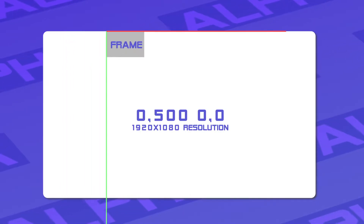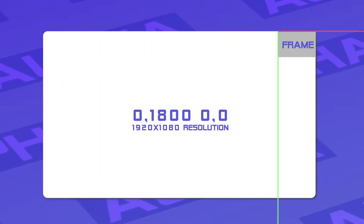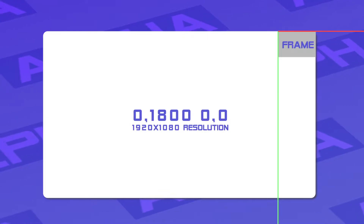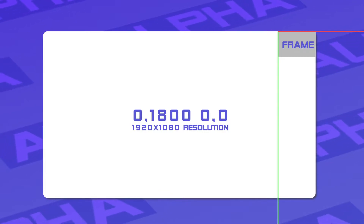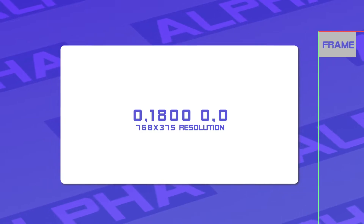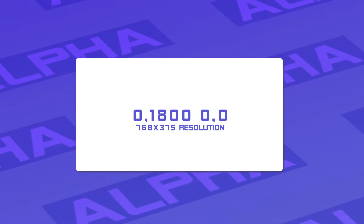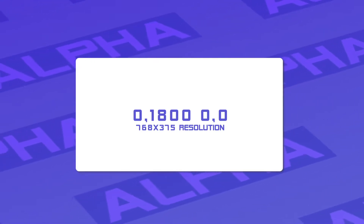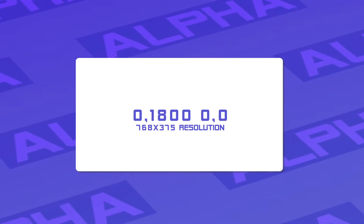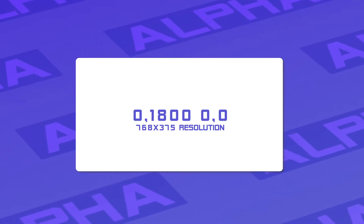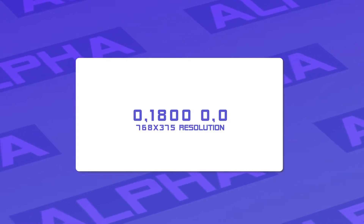Let's try 500, and now 1800. You can see our frame is positioned at 1800 pixels from 0,0 — yet look what happens when we switch to a smaller resolution device. Our frame has disappeared from the screen, because our device is now 768 pixels on the x-axis, whereas we've positioned our frame at 1800 pixels on the x-axis.